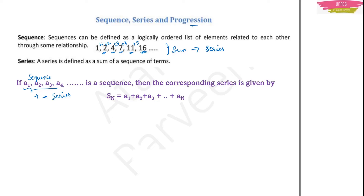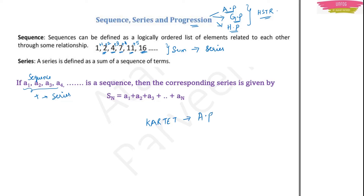Now, third is progression. In progression there are three types: one is arithmetic progression (AP), second is geometric progression (GP), and third is harmonic progression (HP). These three are there for HSTR syllabus, but for Karnataka TET only arithmetic progression is there in the syllabus. This lecture is all about arithmetic progression only. For HSTR, geometric and harmonic progression I will do separately.